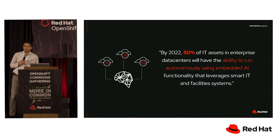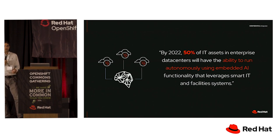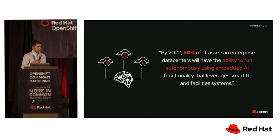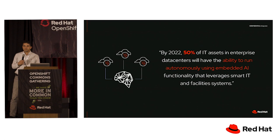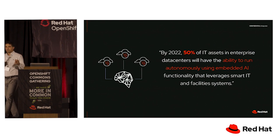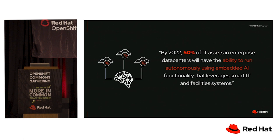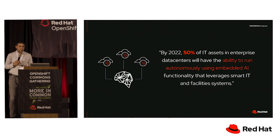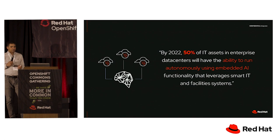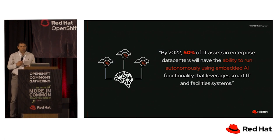Why should we care about this? We all want to know what's happening to our systems, and if there are alerts or things that are going to fail. Imagine at a cluster level or multi-cluster level when there are hundreds of nodes and thousands of projects — this is the classic pet versus cattle analogy. You can't look at each one individually; you want to know in aggregate. By 2022, according to IDC, 50% of IT assets will have the ability to run autonomously using embedded AI.